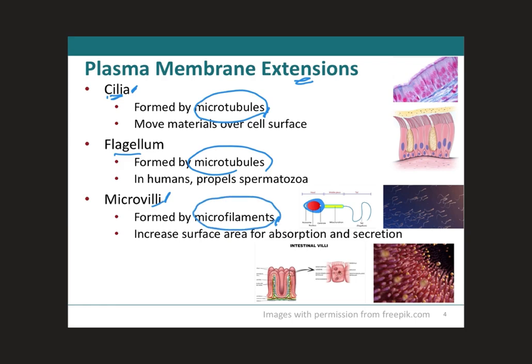Cilia are found on many body cells, including epithelial cells that line the airways of the respiratory system. Cilia basically means hair. They beat rhythmically, constantly moving waste materials such as dust, mucus, or even bacteria that might enter your airways, to get these materials away from the lungs and towards the mouth. If bacteria gets into the lungs, it causes an infection called pneumonia, so cilia beating is essential to remove foreign objects from the lungs.